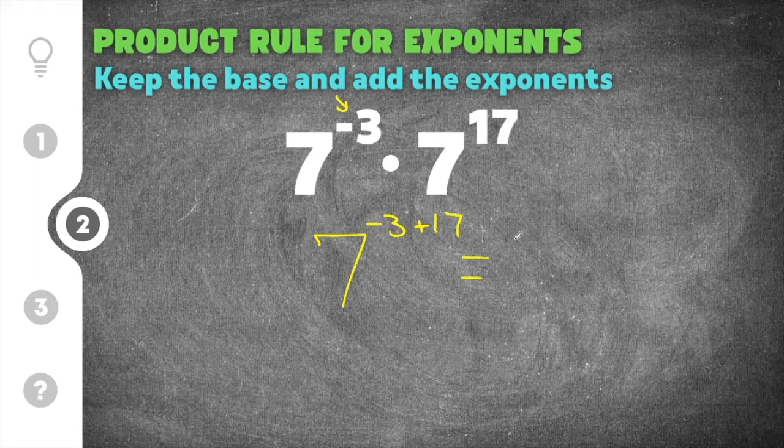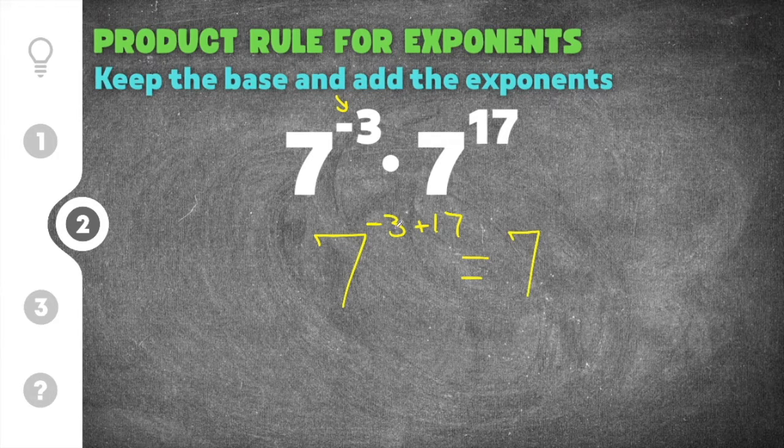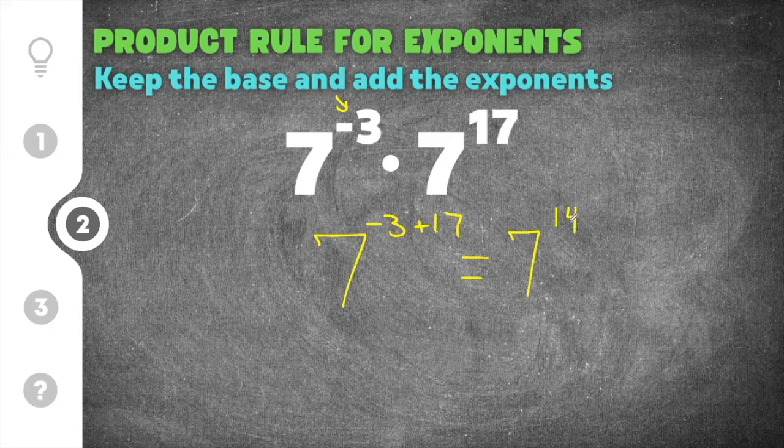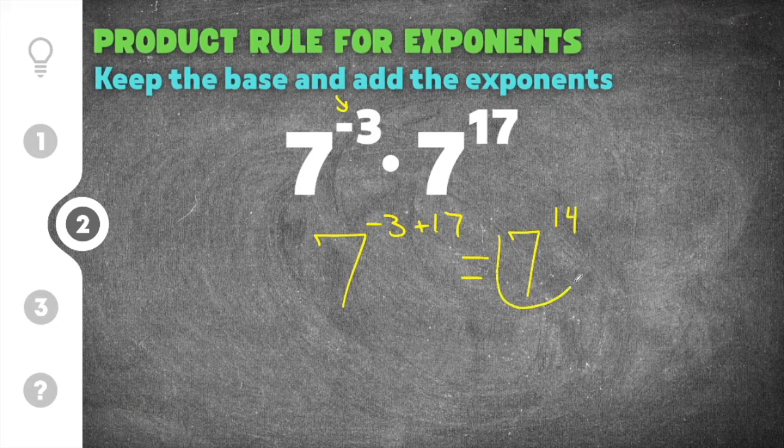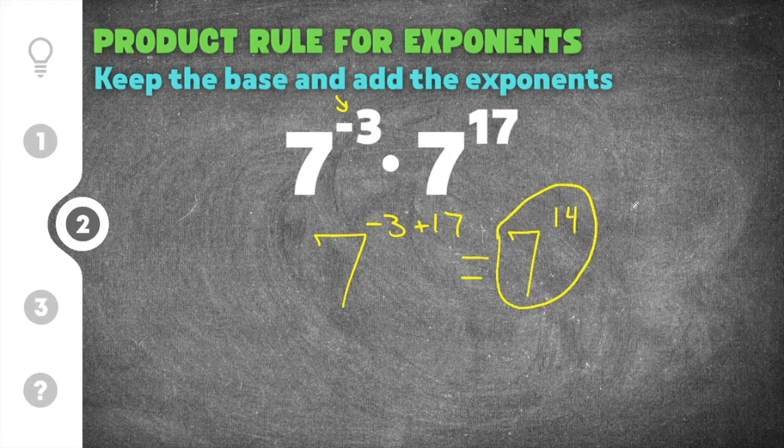When I simplify this, I keep the base of seven and then I'm going to add negative three plus seventeen, which is fourteen. So our final solution for this product rule problem is 7 to the fourteenth power.